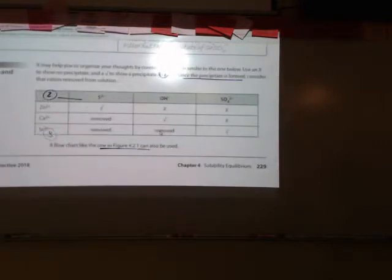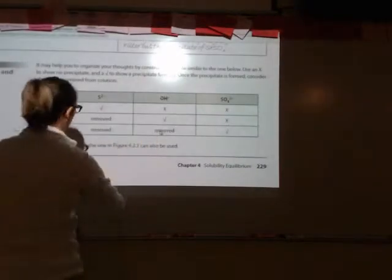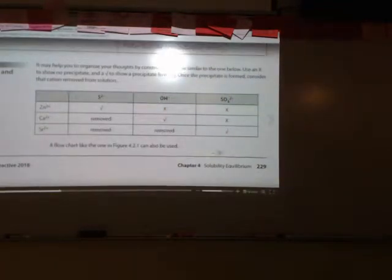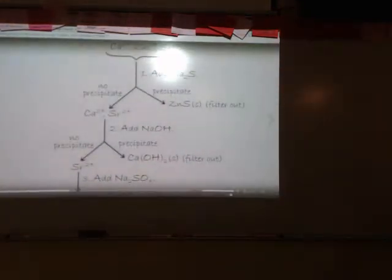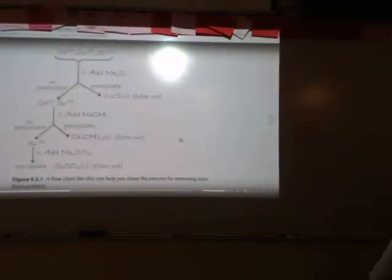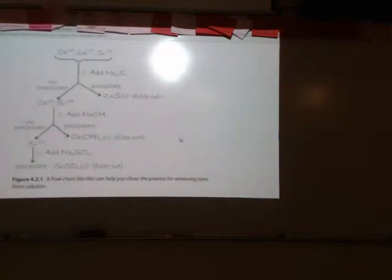A couple of ways to sort of keep track of ions that have precipitated is using a table, which I personally think the tables are a little bit confusing. I like a flow chart, so if you take a look at the flow chart on the next page, this flow chart here is showing you what ions you originally had and what you added to the solution to remove specific ions. So you want to select a substance that is going to pull out a single ion at a time because if you pulled out two at a time, you'd have to add something to that precipitate to try and dissolve it to figure out what you really have. So it kind of makes it a little more complicated.